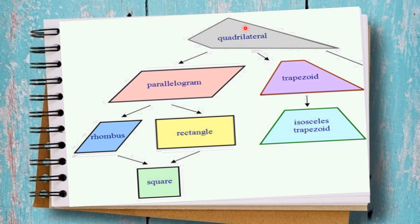Quadrilaterals are any geometrical shape that has four sides and four angles. They are divided into two trees. The first one is the parallelogram, and then come all the other quadrilaterals: the rectangle, rhombus, and square. Then there is the trapezoid family, which includes the isosceles trapezoid and the right trapezoid, and we also have quadrilaterals with no specific name.